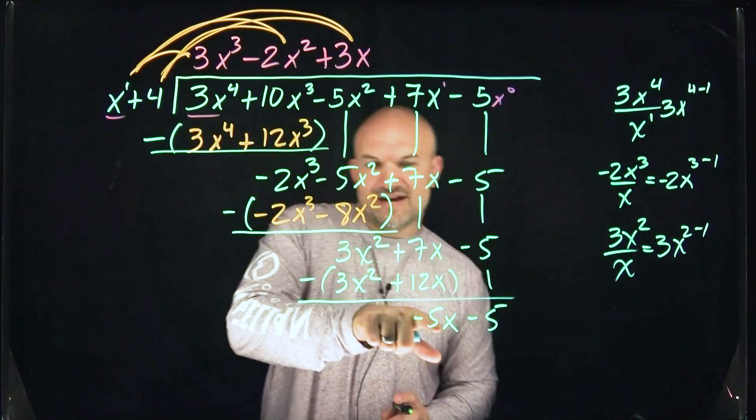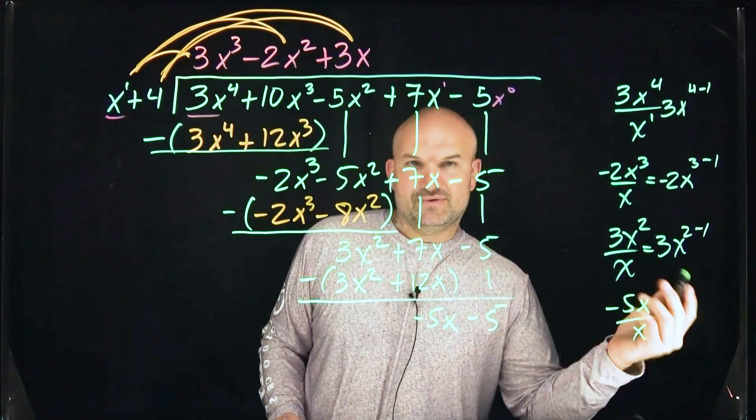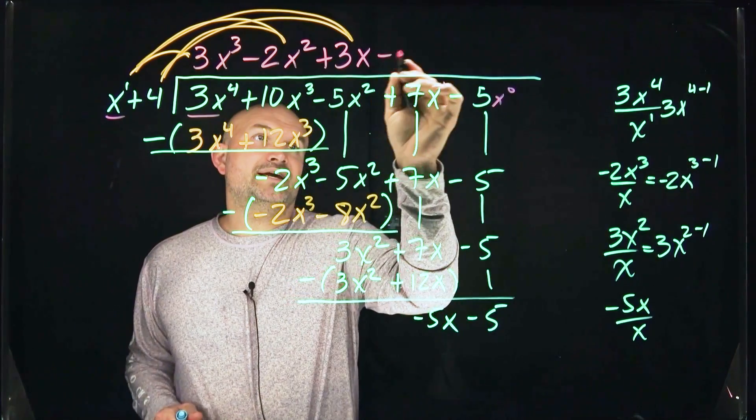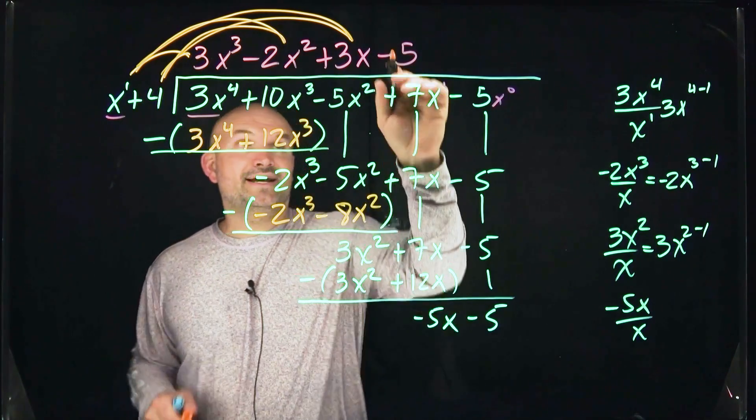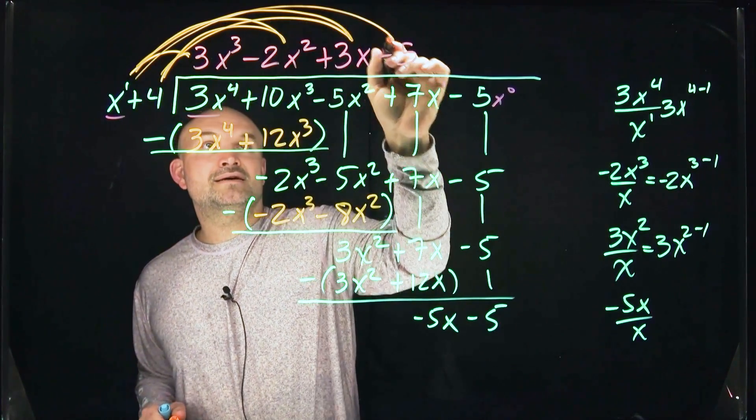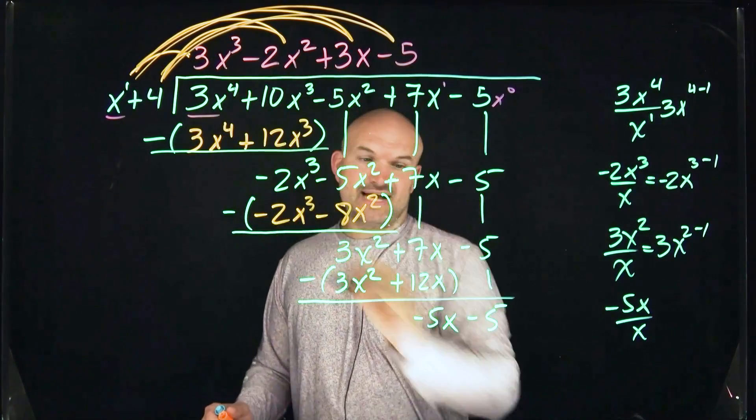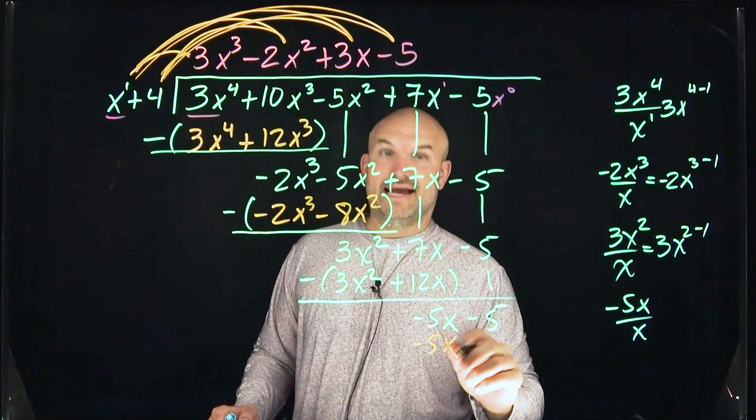How many times does x divide into negative 5x? So negative 5x divided by x. Well, now we just know the x's are going to divide out, so that's going to leave me with negative 5. So I have negative 5. And then again, last thing, multiply the negative 5 times x, negative 5 times 4. So negative 5 times x is negative 5x. Negative 5 times 4 is going to be negative 20.